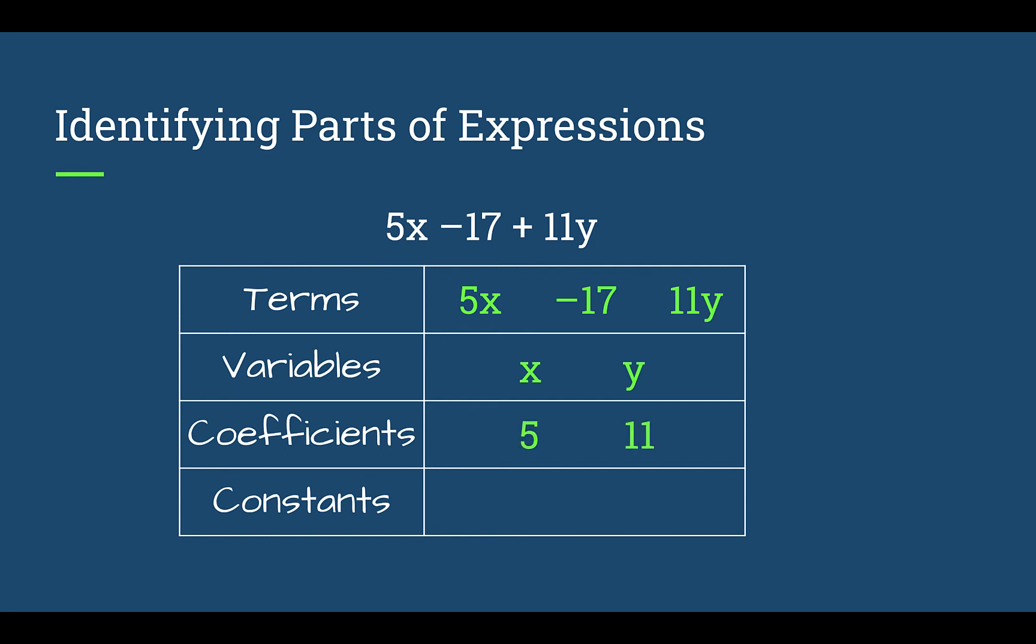Our coefficients are our numbers that are in front of the variables. So 5 was in front of the x. That's the coefficient. 5 is the coefficient of x. And 11 was in front of the y. So 11 is the coefficient of y. Okay, 17 again, our negative 17 didn't have a variable. So it doesn't count as a coefficient.